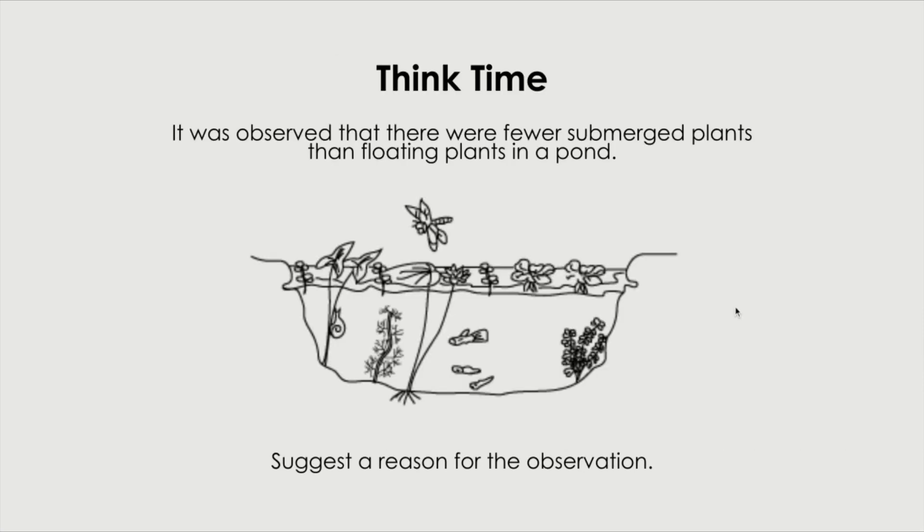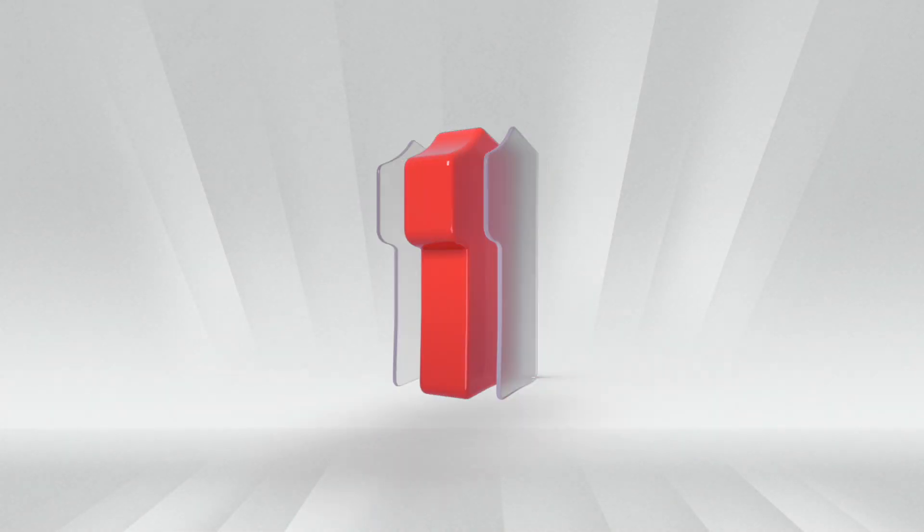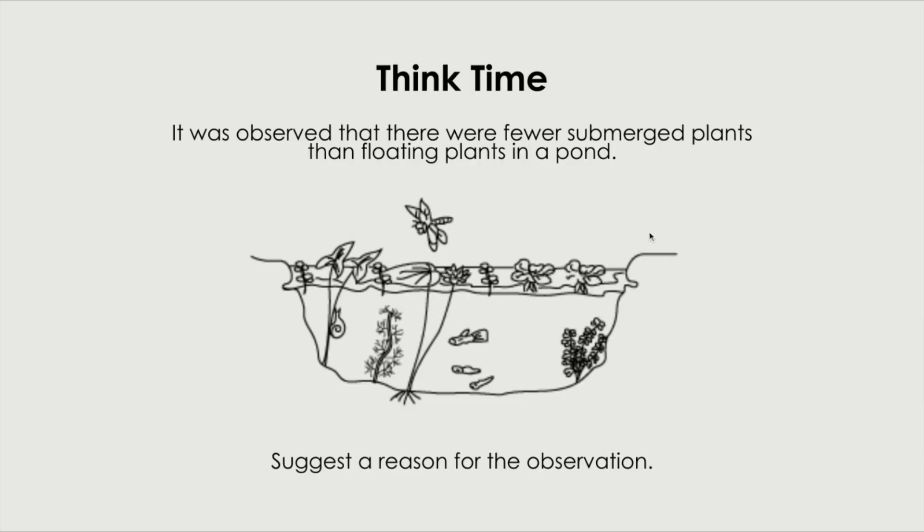It was observed that there were fewer submerged plants than floating plants in a pond. Suggest a reason for the observation. Pause this video and have a think. First of all, just looking at this pond, you can see there's a lot of floating plants. There's a reason why there's fewer submerged plants. Because the floating plants actually block the sunlight from entering.